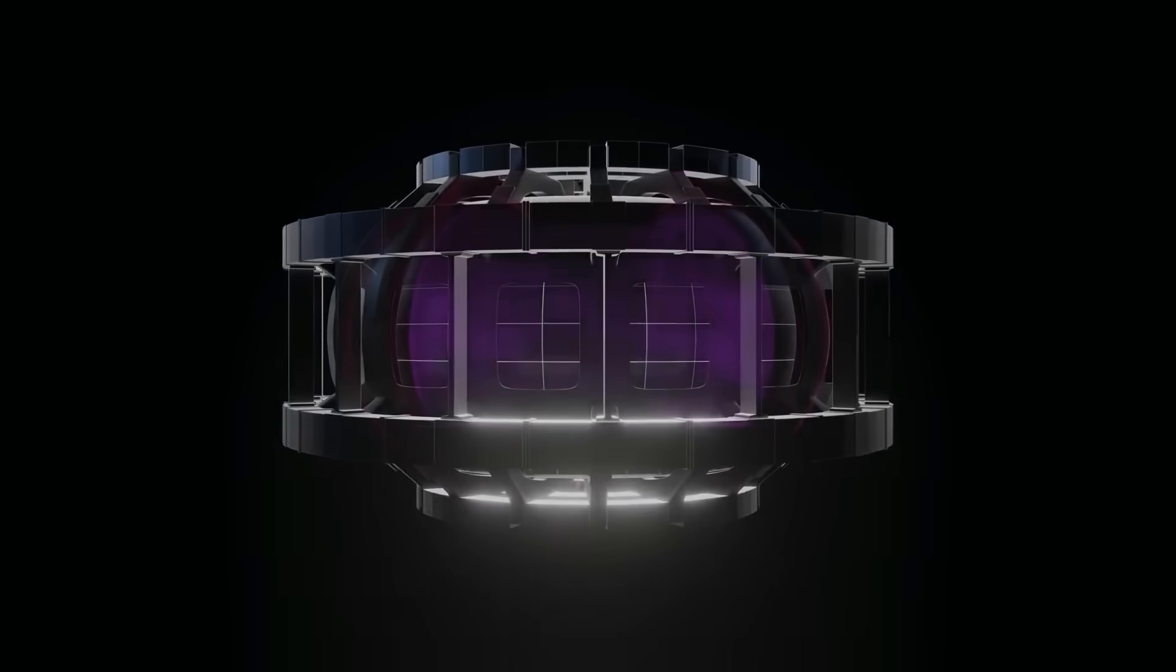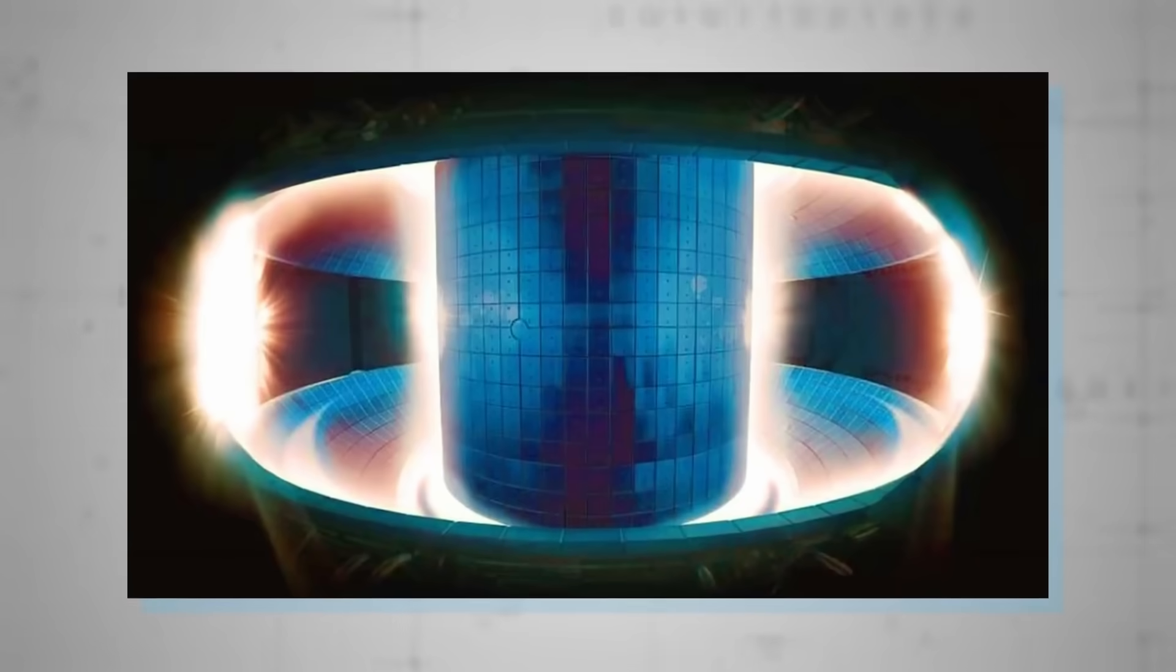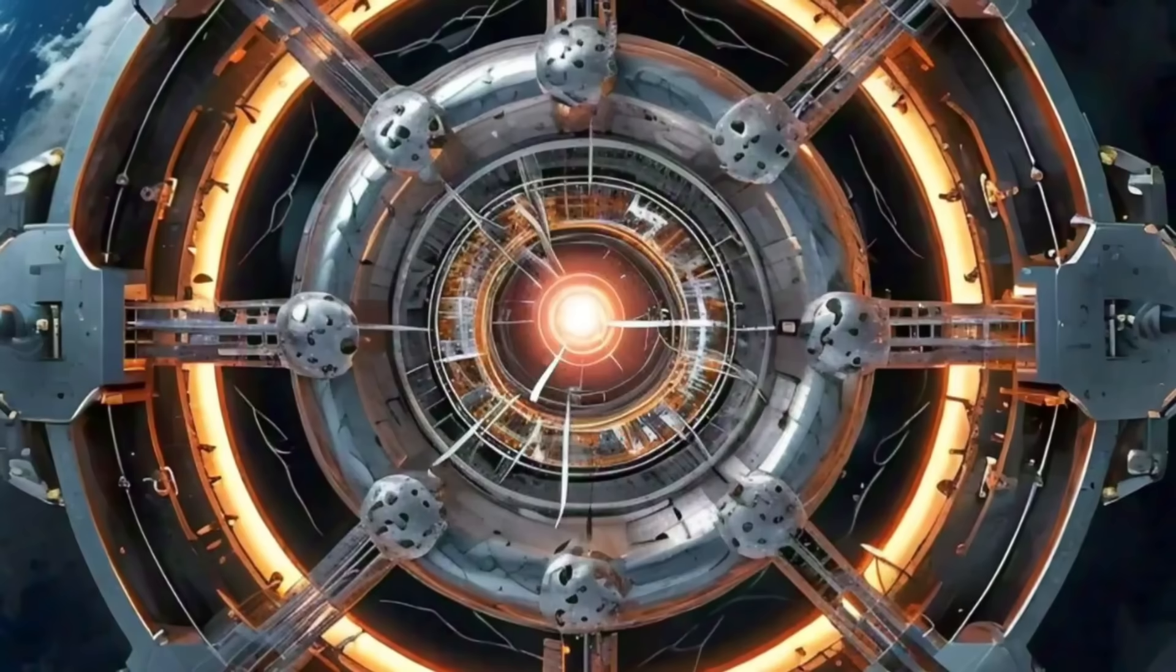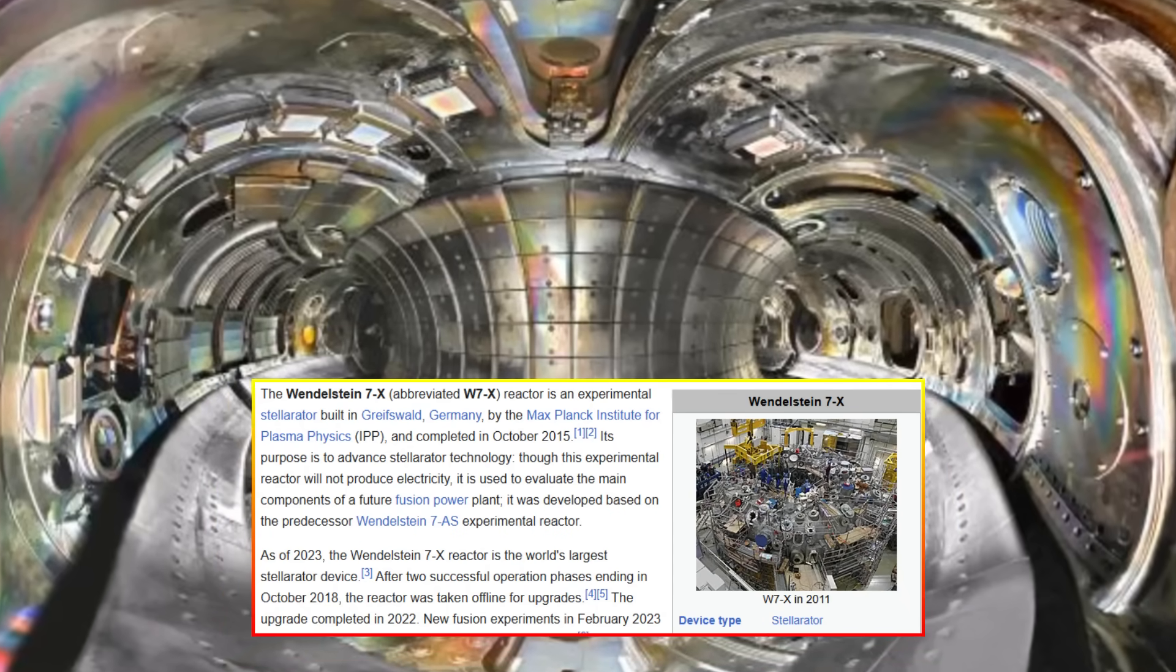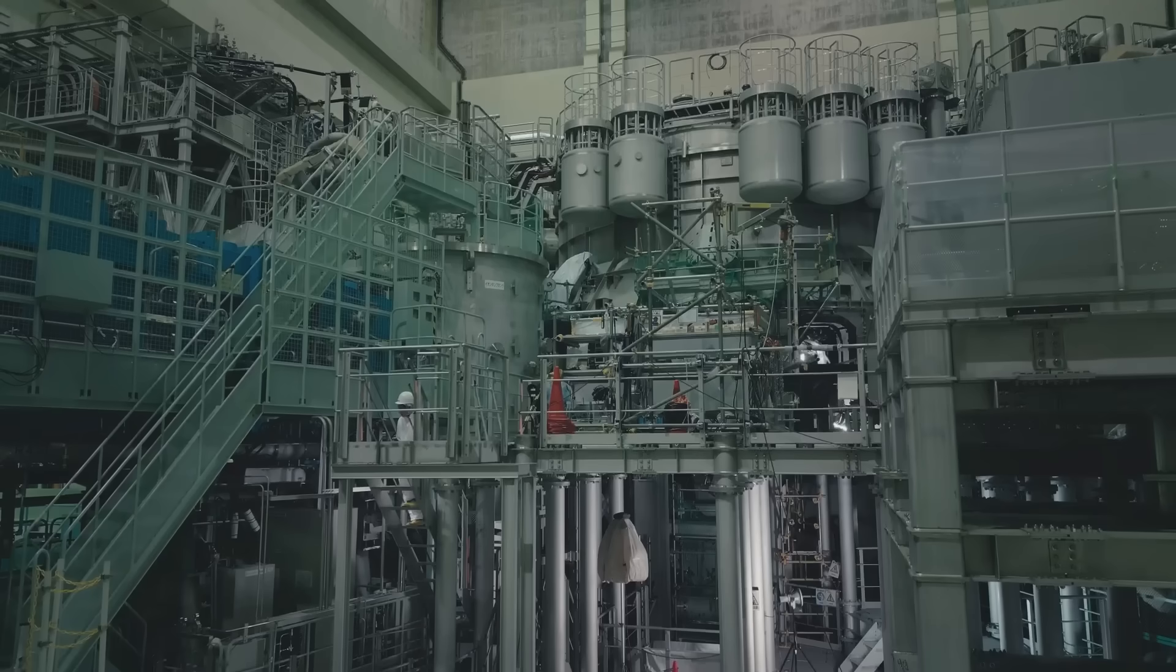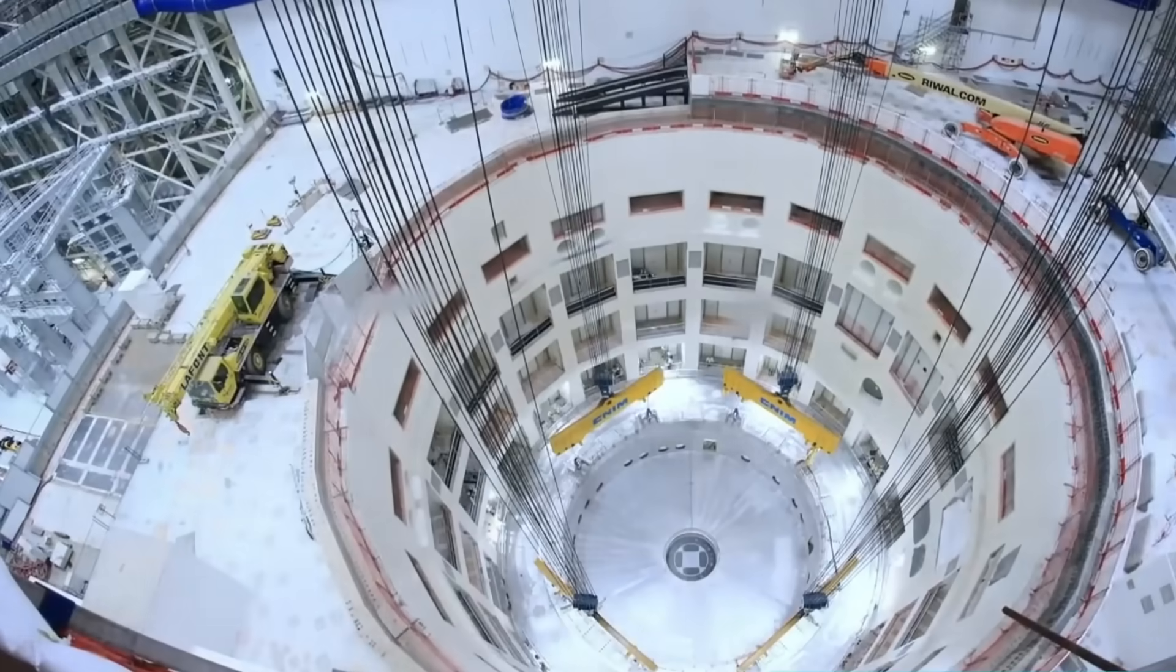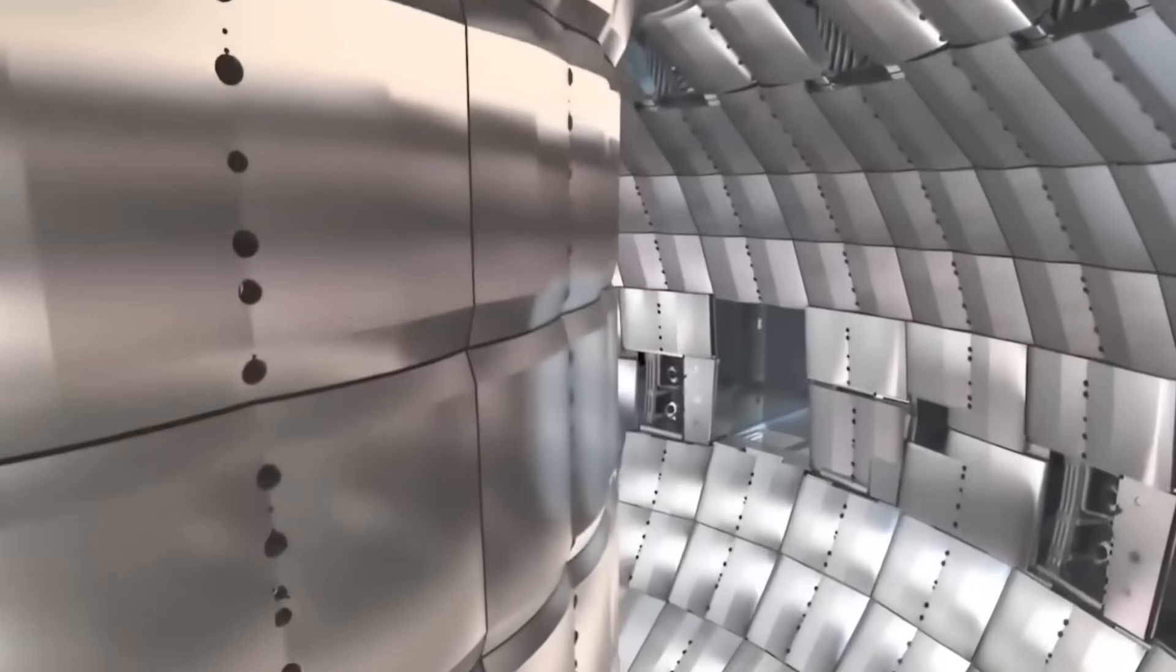China's EAST tokamak, nicknamed the artificial sun, has pushed the boundaries of plasma duration. It maintained a 70 million degree plasma for over 17 minutes, an endurance record that shows how far we've come. Japan's JT-60SA, where our mysterious shutdown occurred, represents the cutting edge of plasma control technology. Its advanced superconducting magnets and sophisticated diagnostics were designed to bridge the gap between today's experiments and ITER's ambitious goals.